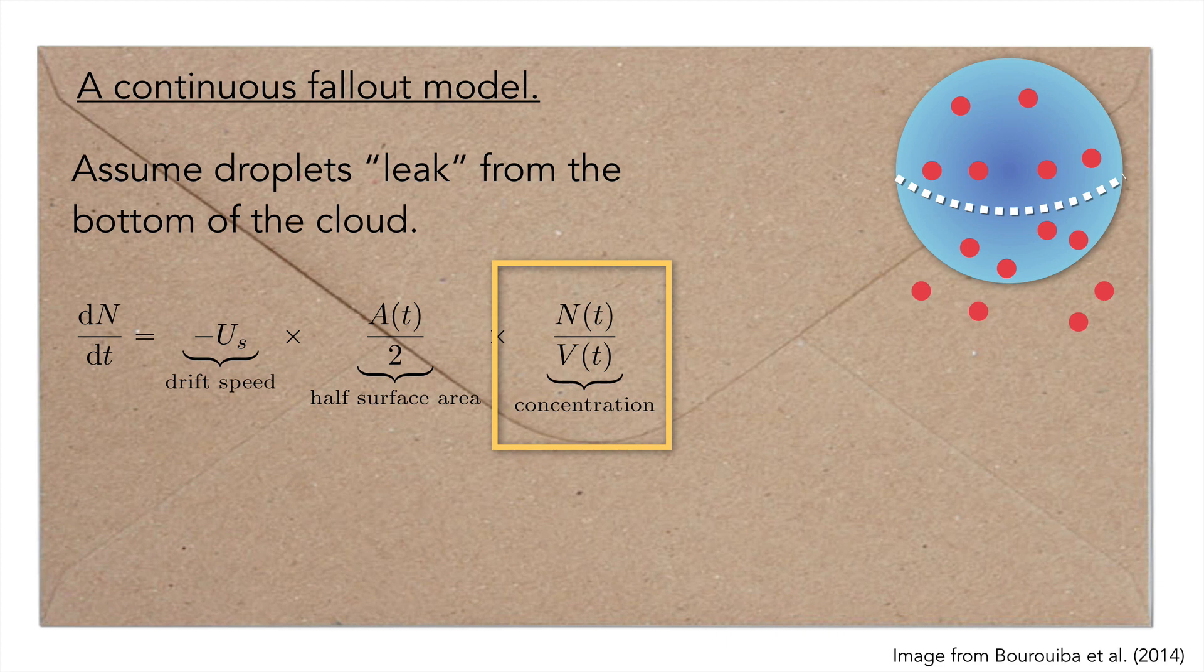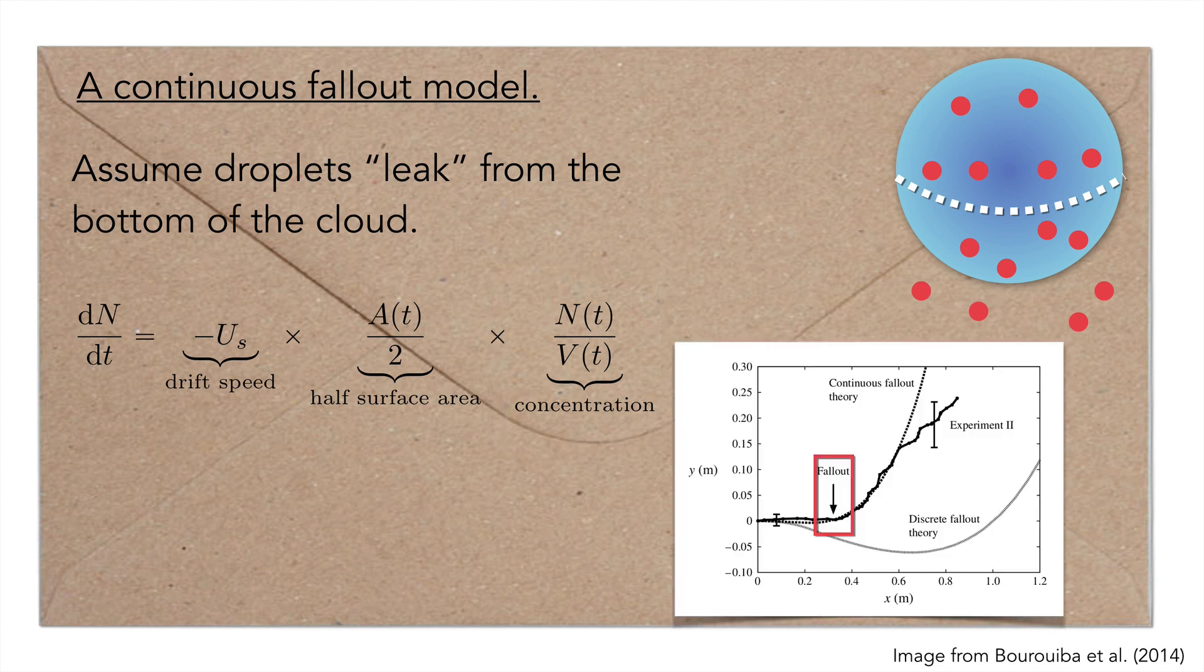For the case of their bead experiments, the authors showed that this continuous fallout theory does provide a fairly accurate fit to the experiment. The red boxed arrow that you see here corresponds to where, in their experiment, the last bead fell out of the cloud.